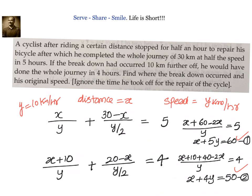Once we know y equal to 10 kilometers per hour, we can go back and substitute in x plus 4y equal to 50. We know y equal to 10, so x plus 40 equal to 50, or x equals to 10 kilometers. So the breakdown occurred at 10 kilometers and the original speed is 10 kilometers per hour.